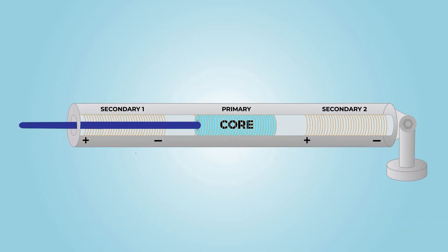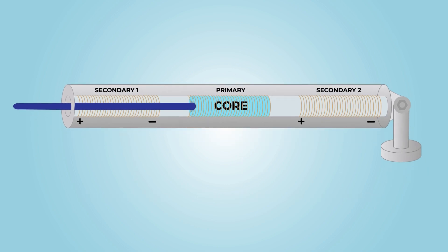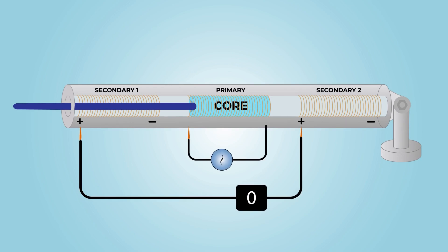The basic design of an LVDT consists of a primary coil, two secondary coils, and a core. The two secondary coils have an equal number of turns but are wound opposite to each other.